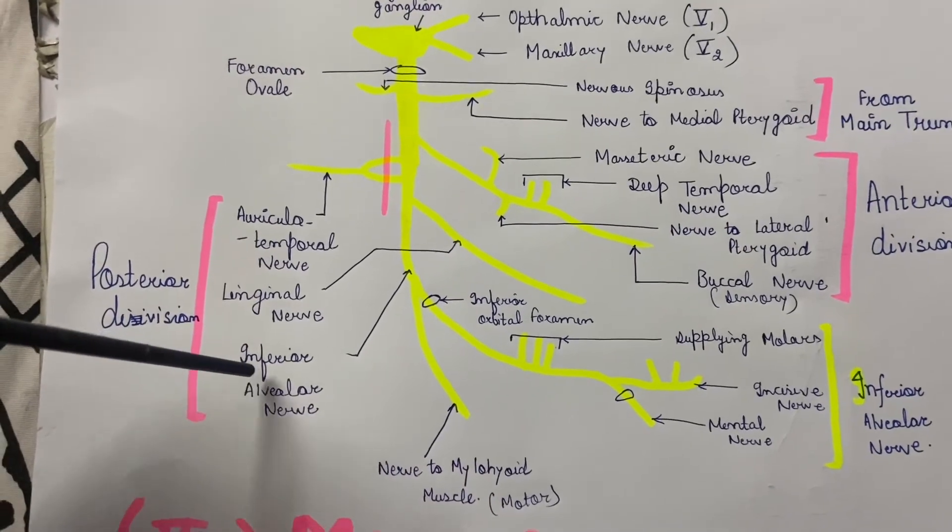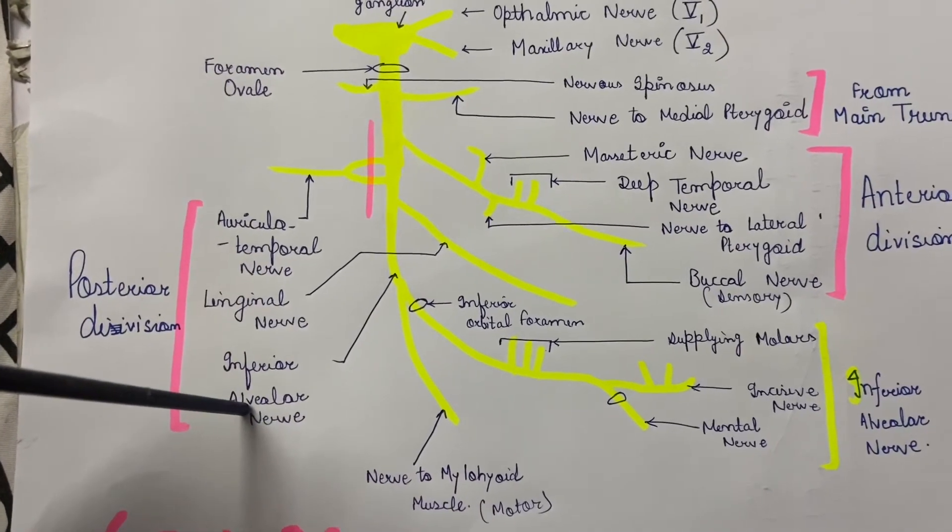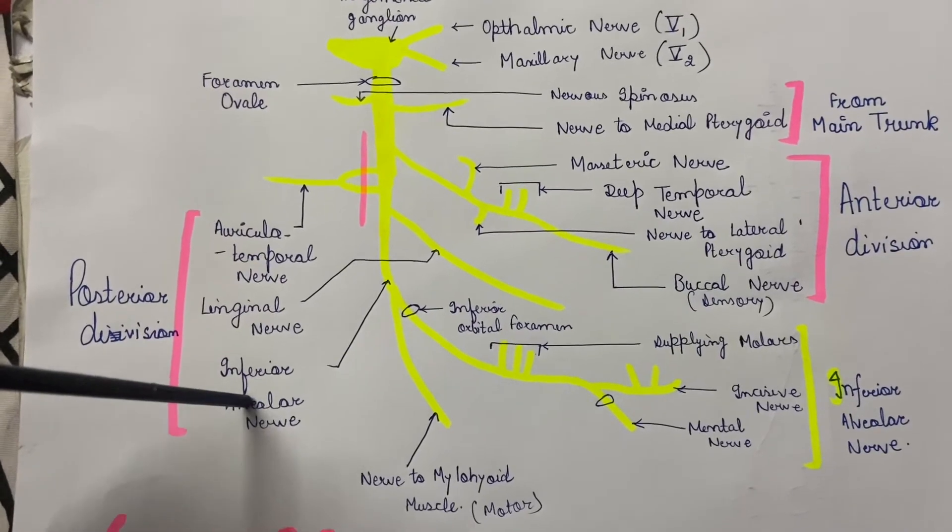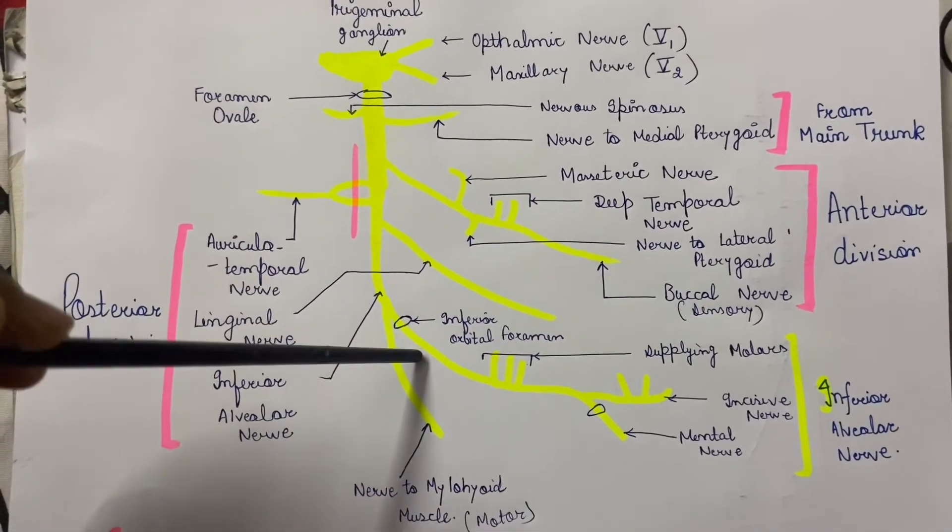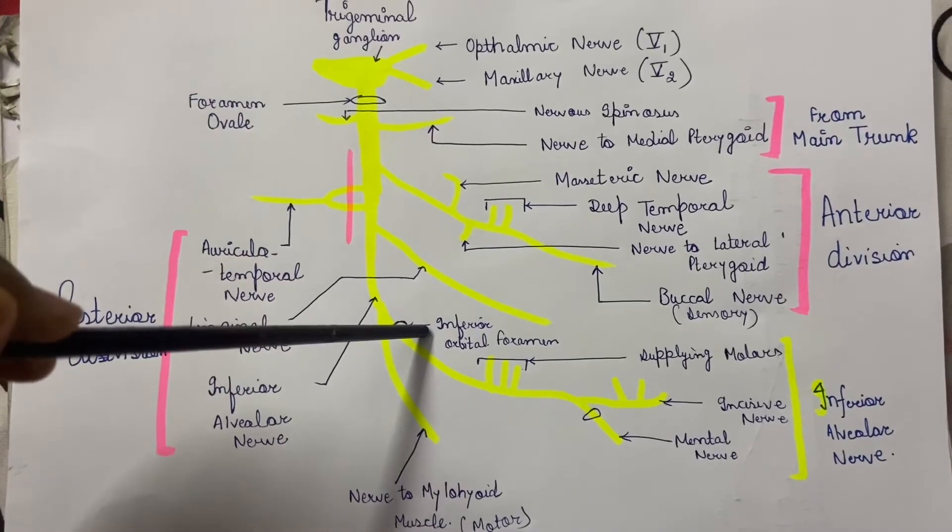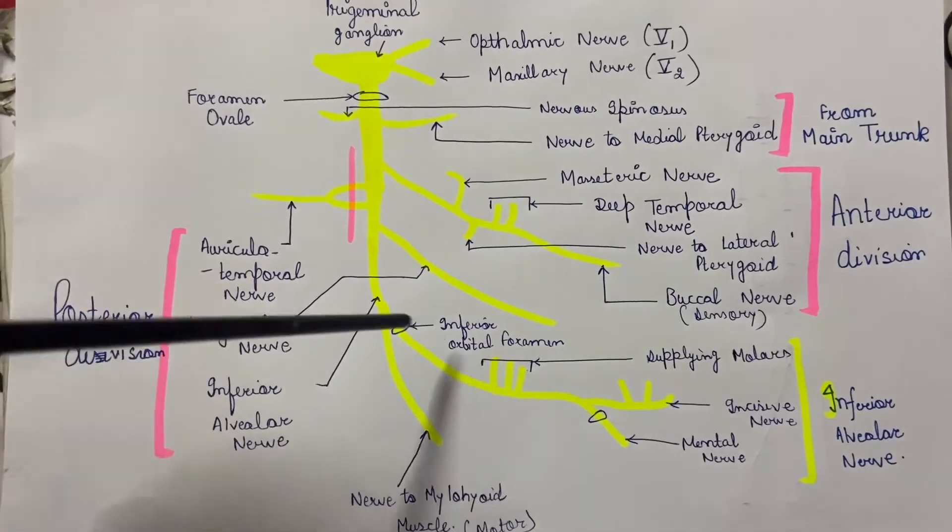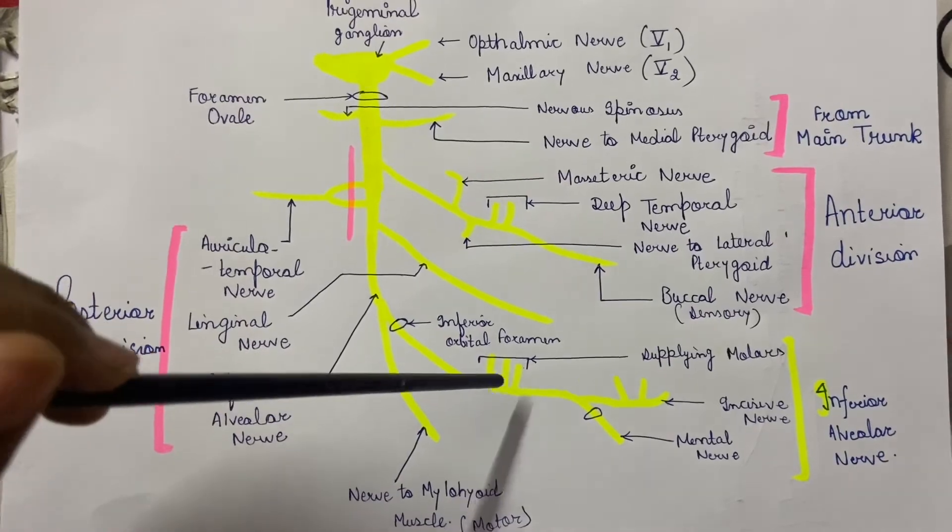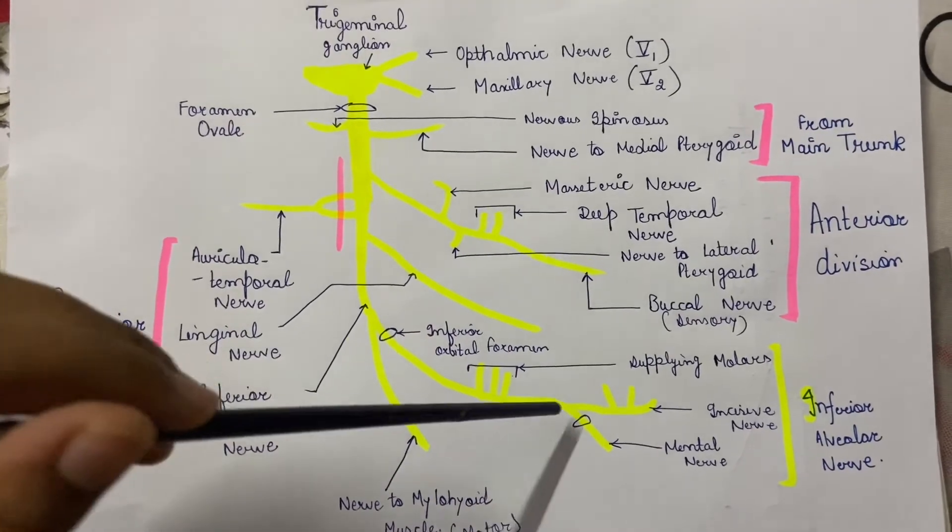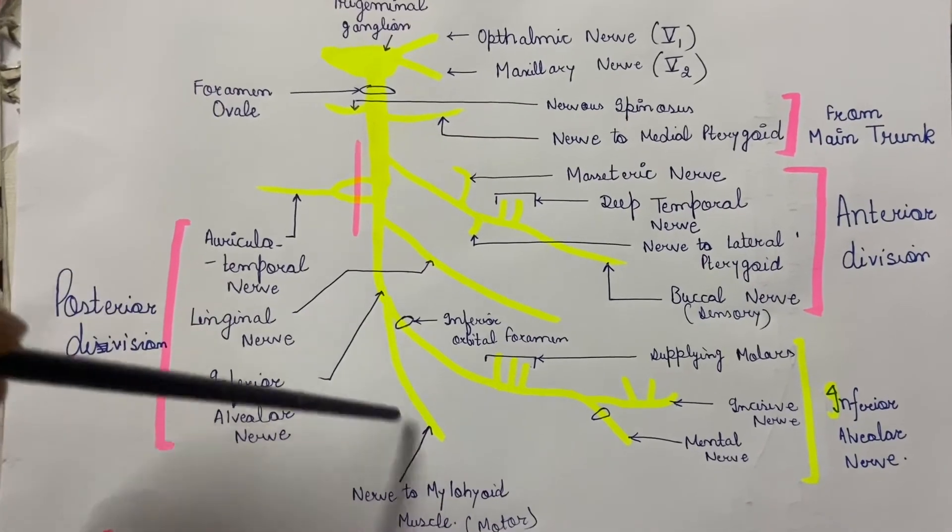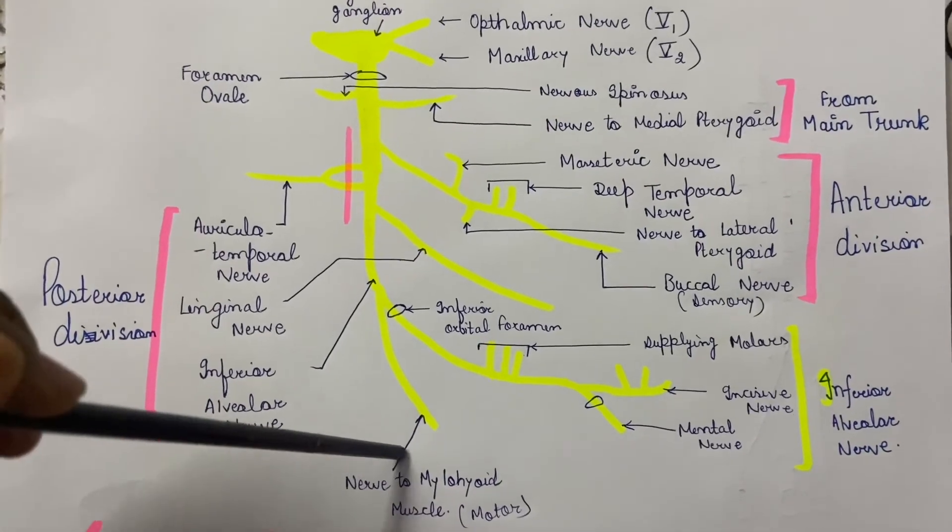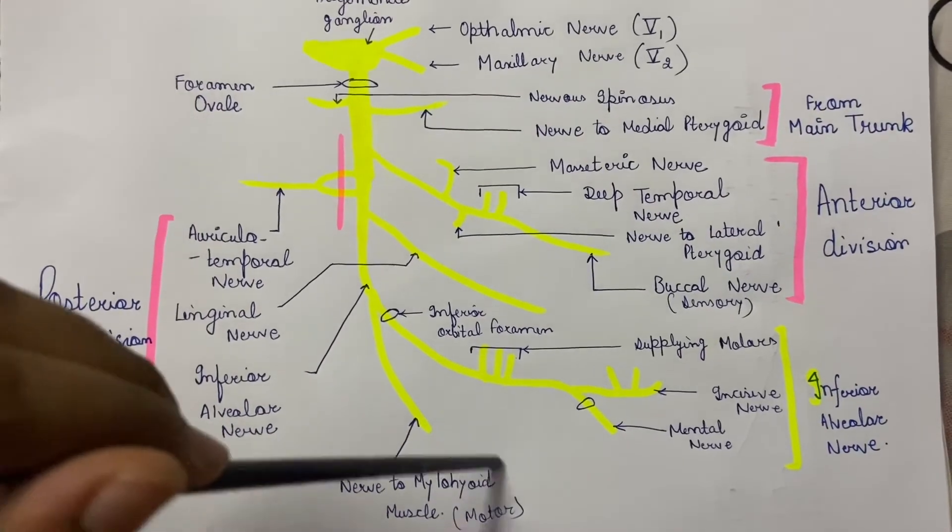Now the third nerve, the inferior alveolar nerve. This inferior alveolar nerve further divides into two halves: one which enters the inferior alveolar foramen, which supplies the whole of your mandible, and one branch which separates from it, the nerve to mylohyoid muscle. This is the motor division of this group.